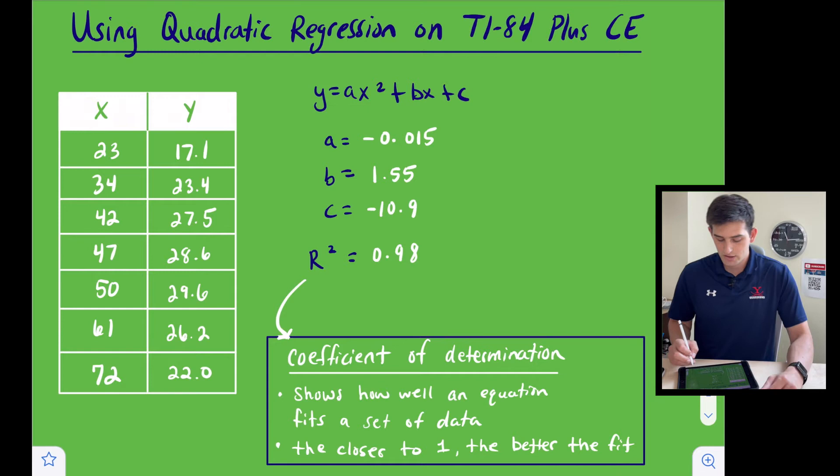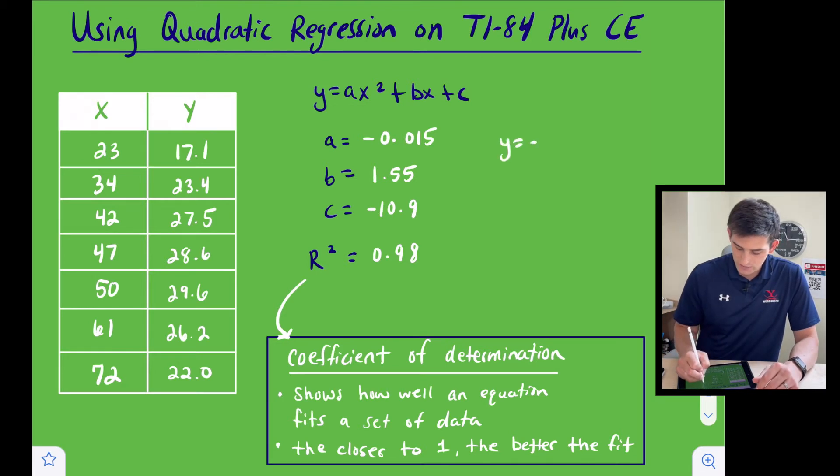Now we can write an equation here as y equals negative 0.015 x squared plus 1.55 x minus 10.9.